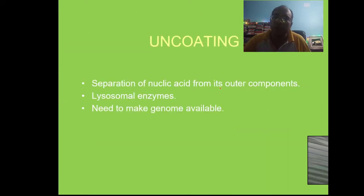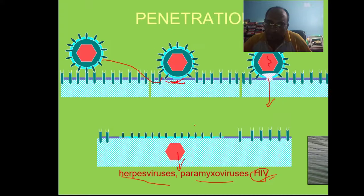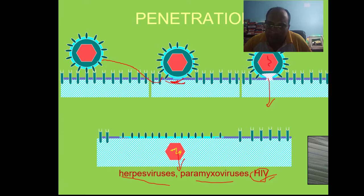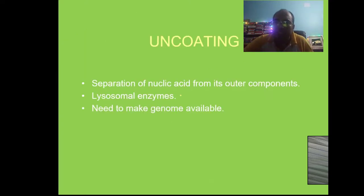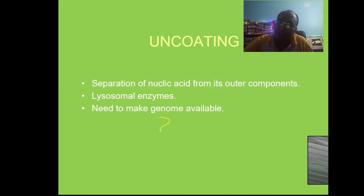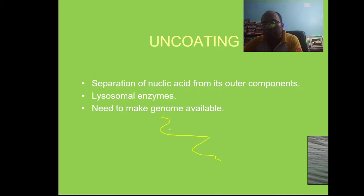Uncoating means the protein coat of the virus is digested inside the cell. The DNA or RNA needs to be released from the capsid. Lysosomal digestive enzymes inside the cell digest the protein coat, allowing the genome — RNA or DNA — to come out.